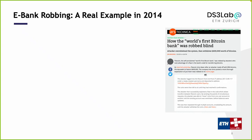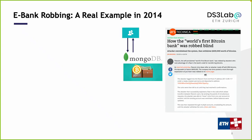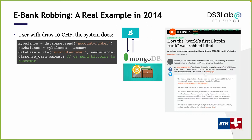The attacker successfully exploited a flaw in the code which allowed transfers between users. By sending thousands of simultaneous requests, the attacker was able to move coins from one user account to another until the sending account was overdrawn — before balances were updated. Conceptually, if someone wants to withdraw money from an account, the system runs four steps: read the balance, compute the new balance, update the database, then withdraw the money.